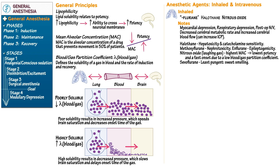Sevoflurane is the least pungent of the agents and is sweet-smelling, whereas enflurane, isoflurane, and desflurane are pungent agents with airway irritation and spasm. Before moving to intravenous agents, note that anesthetics can trigger a serious reaction called malignant hyperthermia — a hypermetabolic crisis that can be fatal. A key trigger is the combination of inhaled anesthetics and neuromuscular blockade, especially succinylcholine.